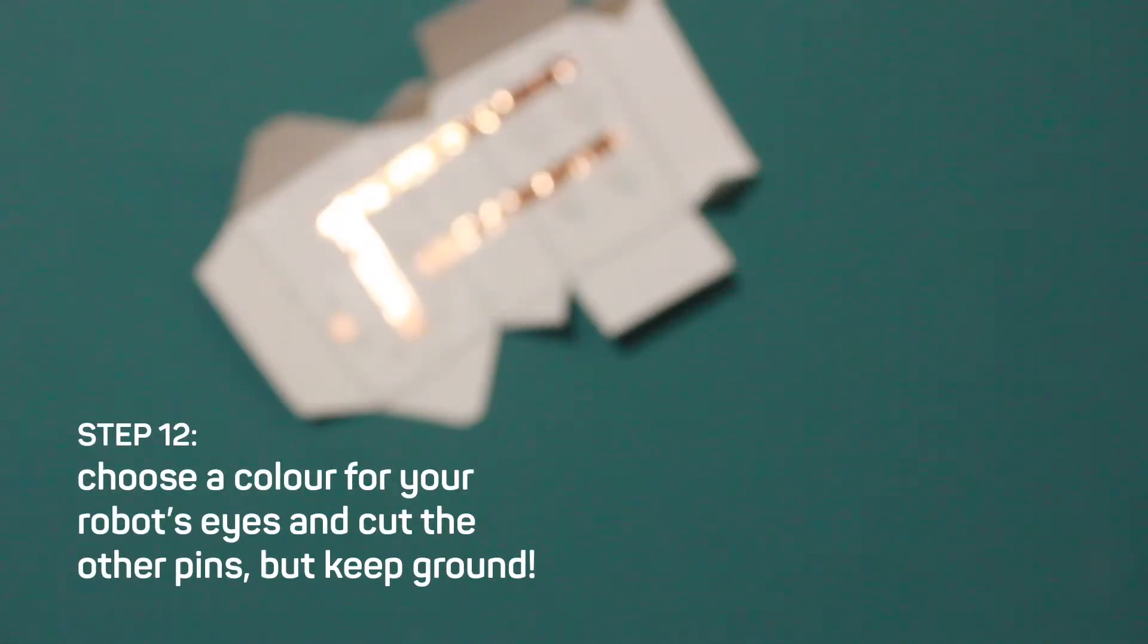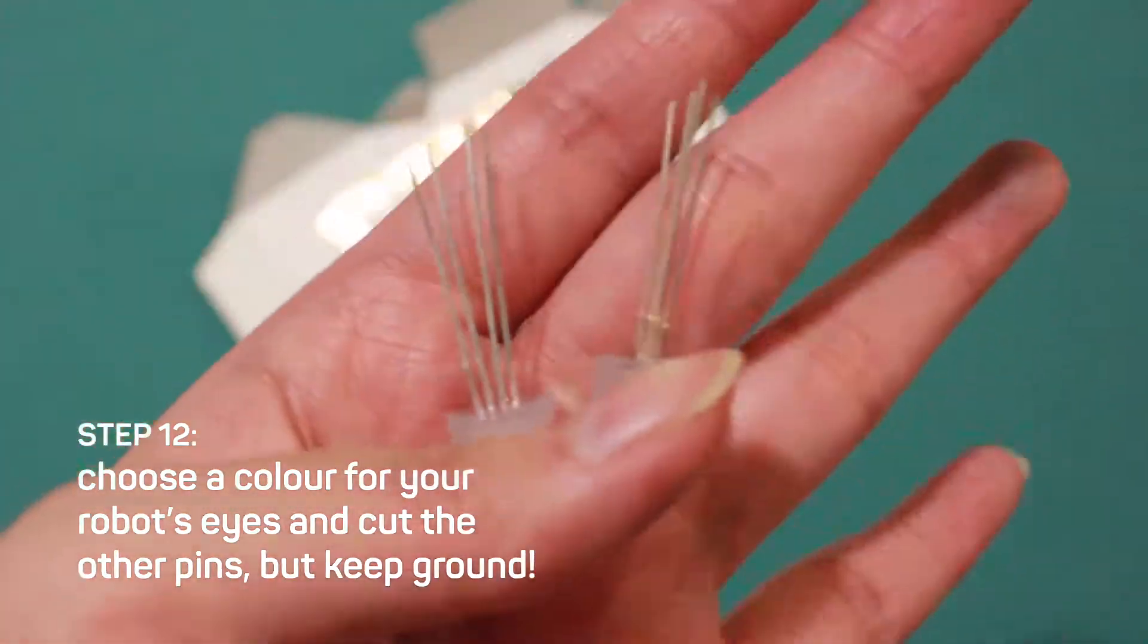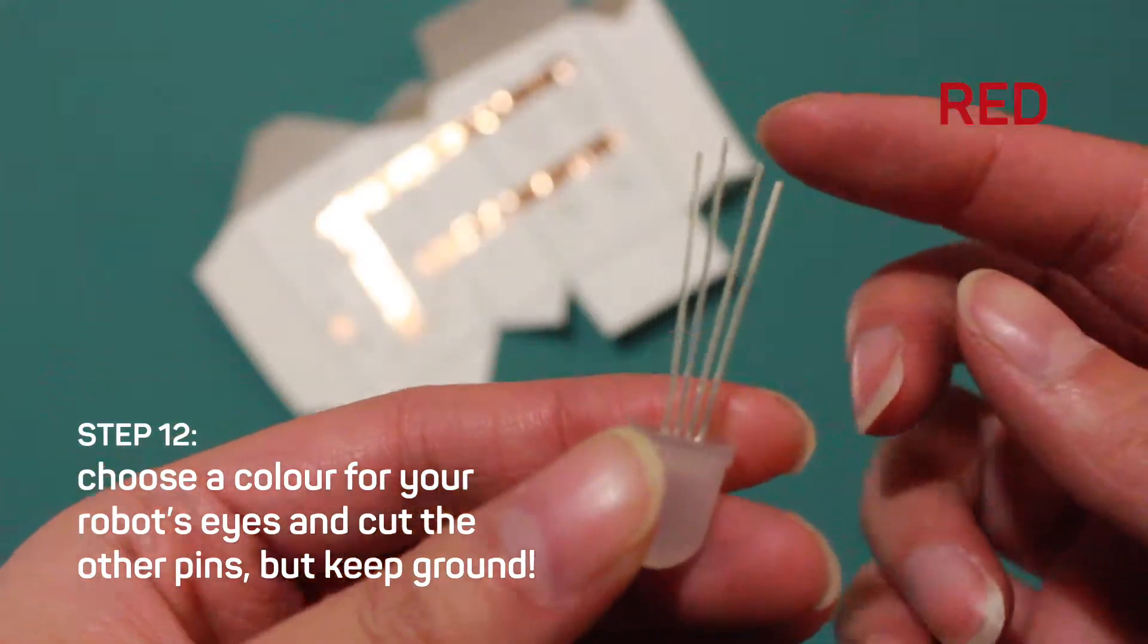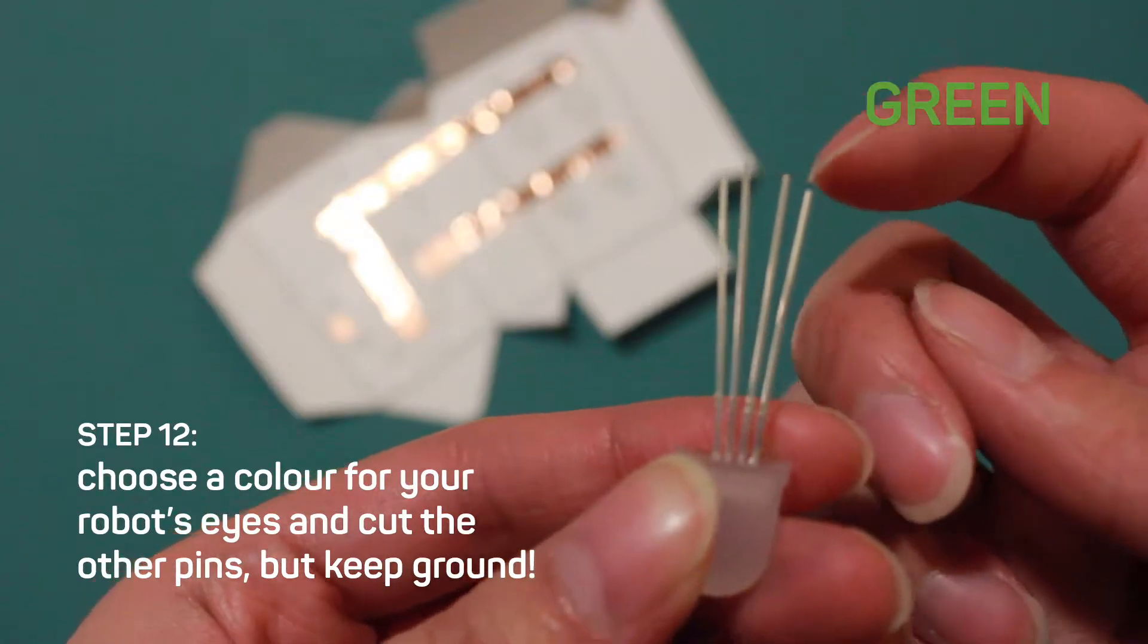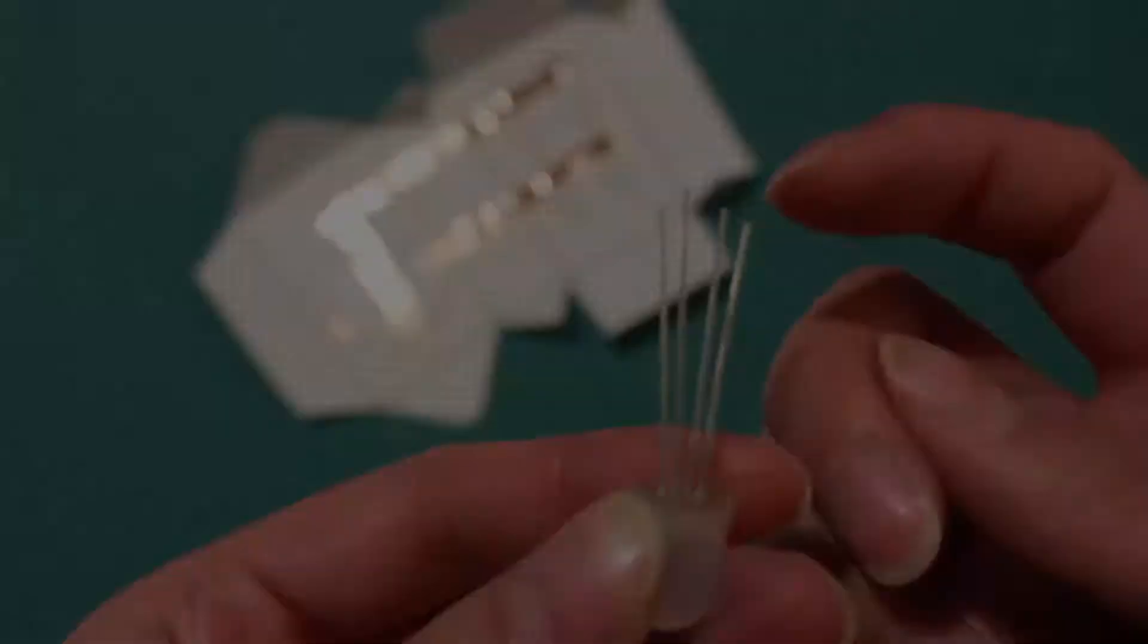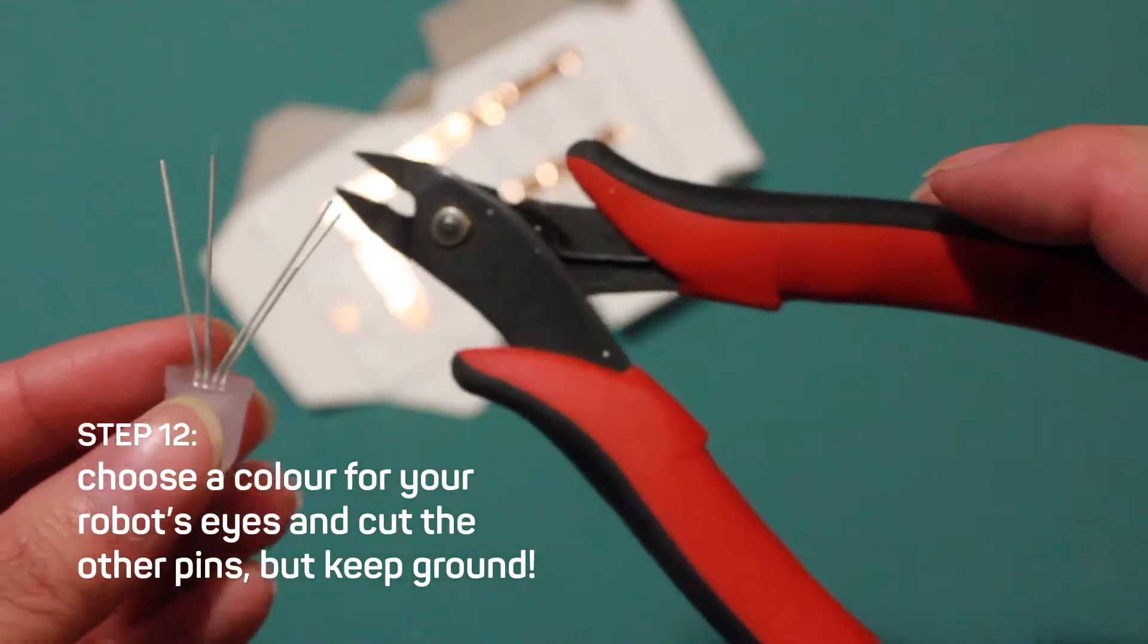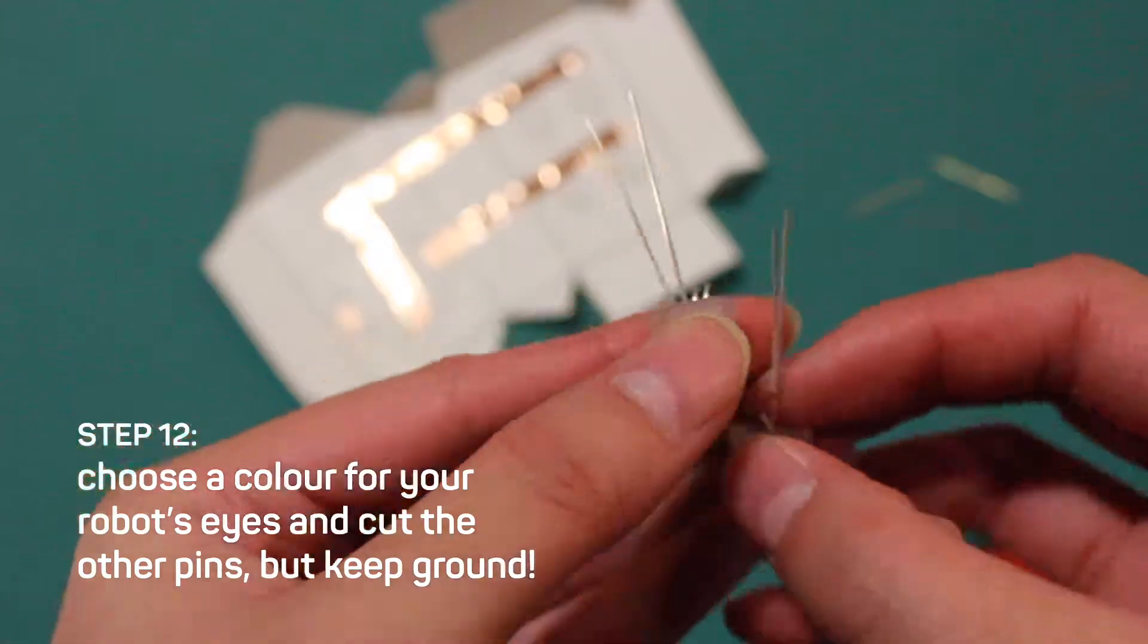Step 12, now you'll need your RGB LEDs. You'll notice four pins on your LED. This one's red, this one's ground, this one's green, and this one's blue. Choose a color for your robot's eyes. Cut off the other pins, except for the color you've chosen, and ground, which is the longest pin.